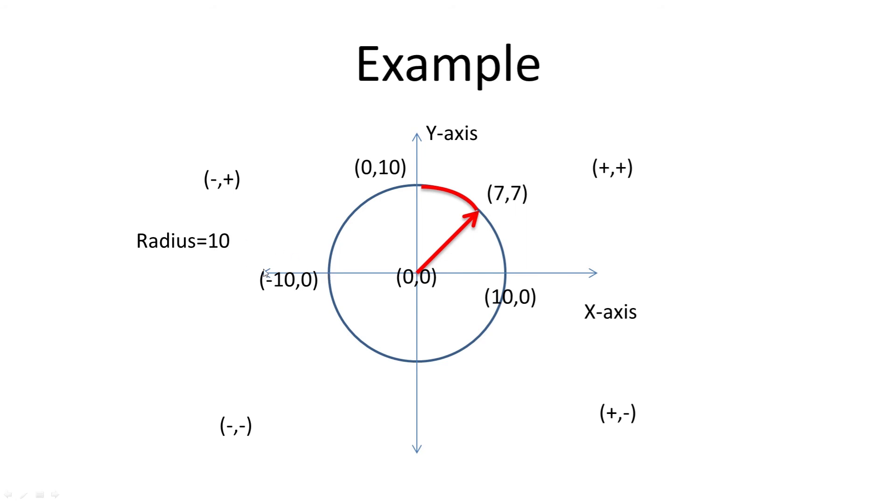So this becomes minus 10,0, opposite of this. Similarly, this is 0,10. This point over here is going to be 0, minus 10. So this is the basic concept of midpoint circle algorithm.